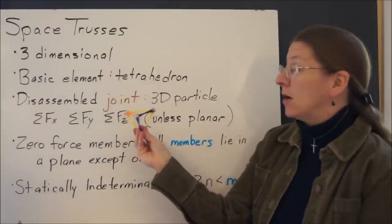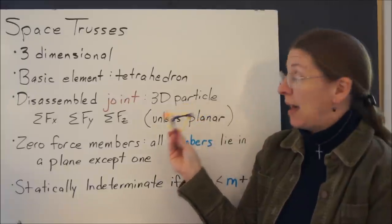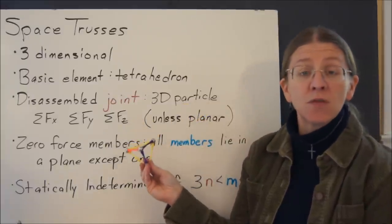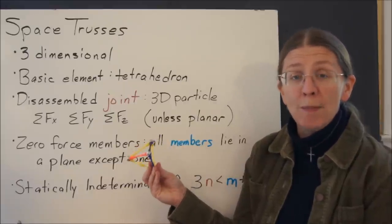That means if you take it apart and you look at any individual joint, you will have a three-dimensional particle. So that means you have the sum of the forces in X, the sum of the forces in Y, and the sum of the forces in Z to be able to solve for the internal member forces.